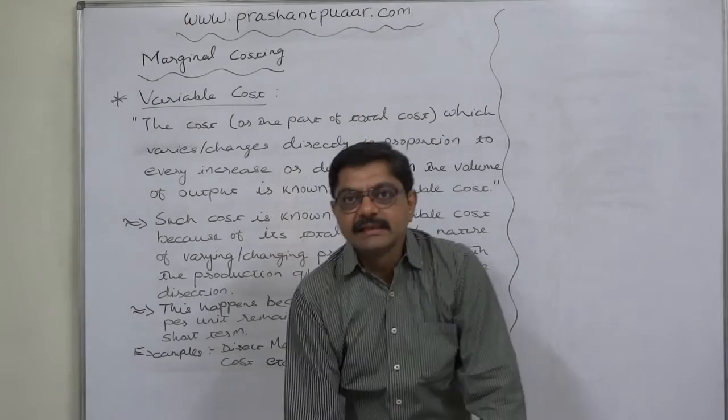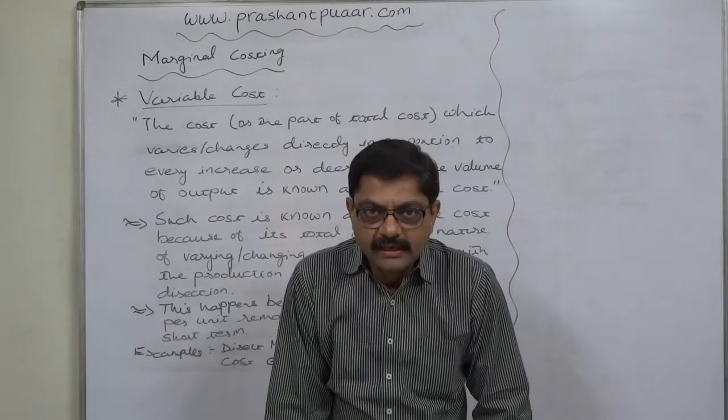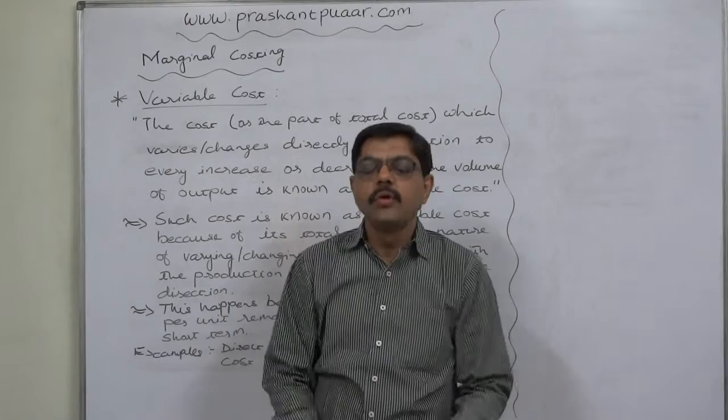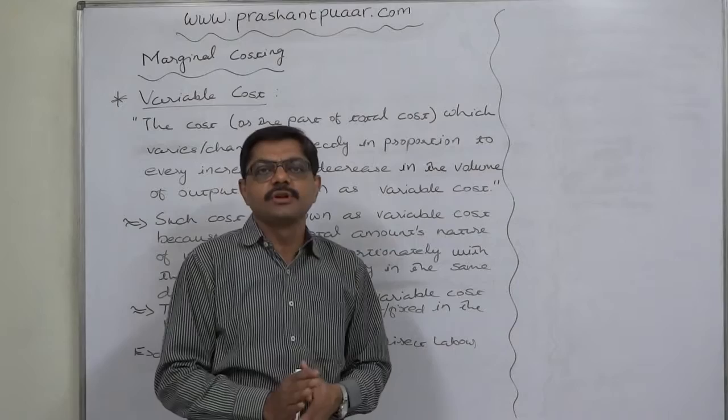As we know in marginal costing, we need to segregate the total cost into two main parts: variable cost and fixed cost. Now the question is which type of cost, or what part of total cost, should be treated as variable cost? The answer is that part of total cost which varies or changes according to the changes in production quantity is the variable cost.